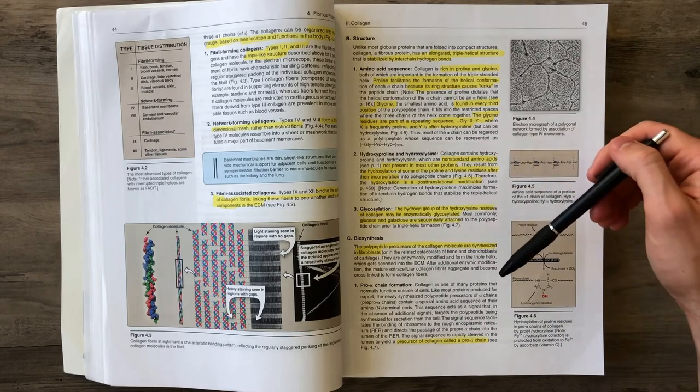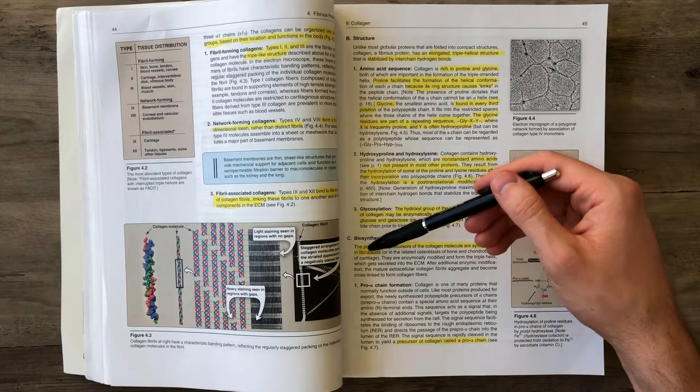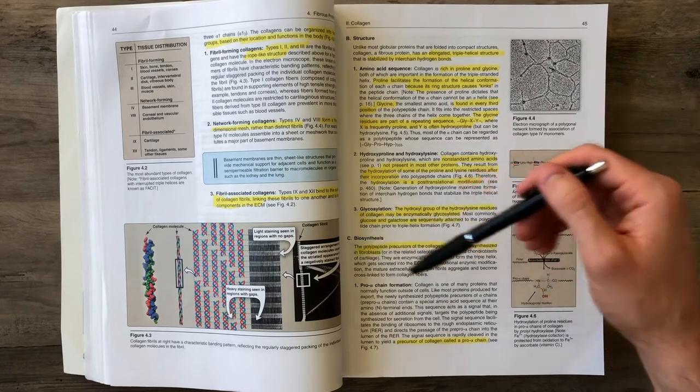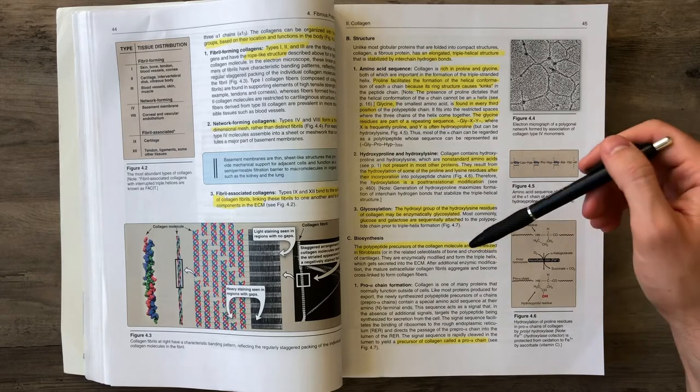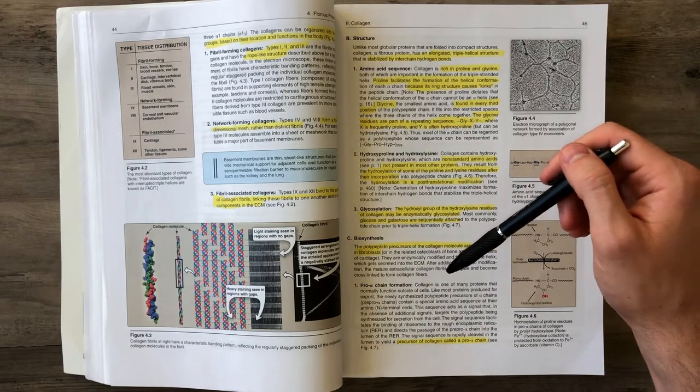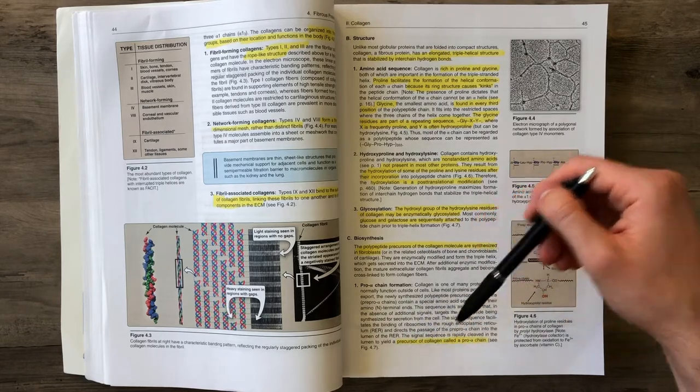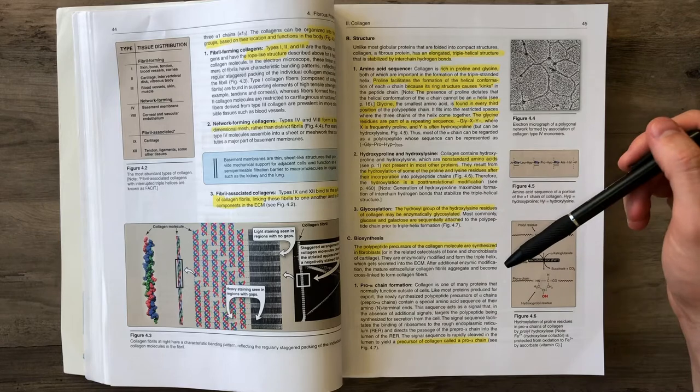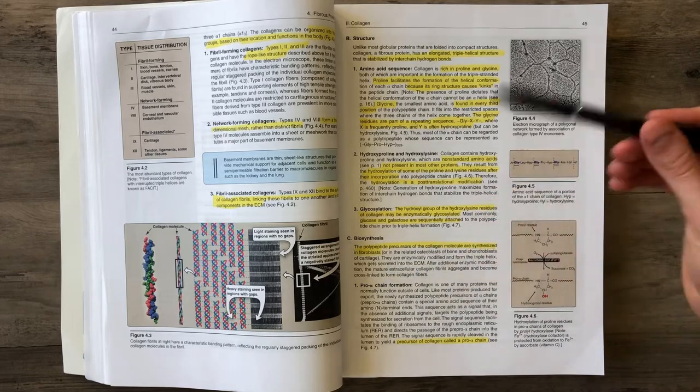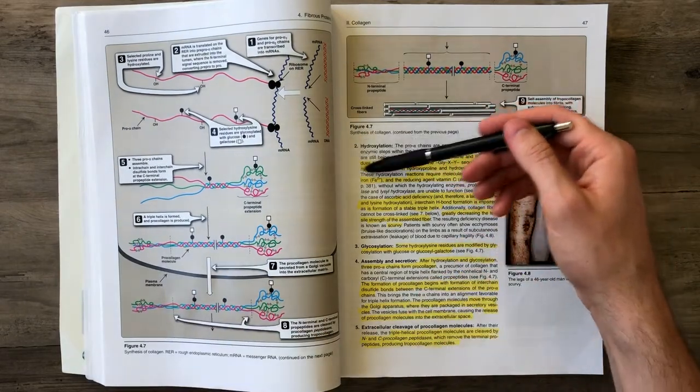The polypeptides that form into collagen are formed by fibroblasts. Fibroblasts are precursor cells that create the collagen molecule and spit it out into the extracellular matrix. It starts with the production of pro-alpha chains, which is the precursor.